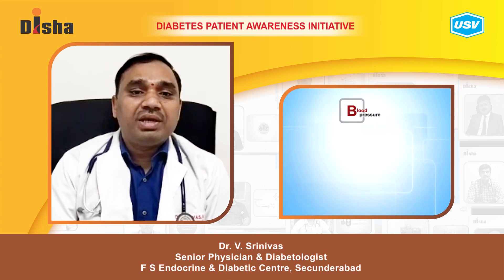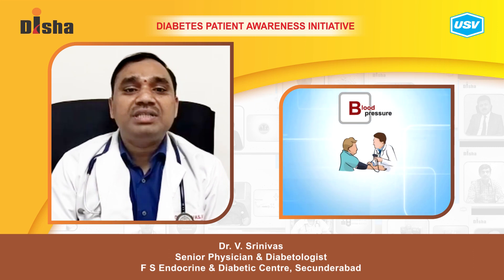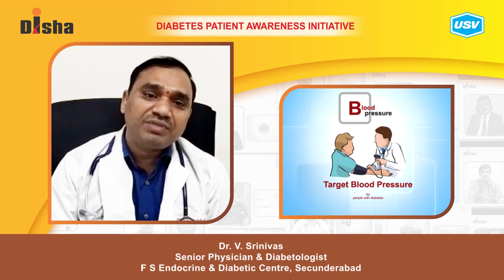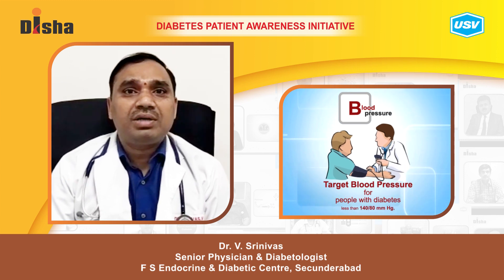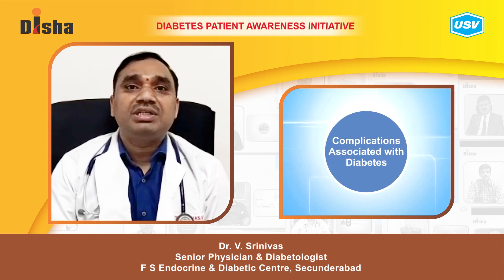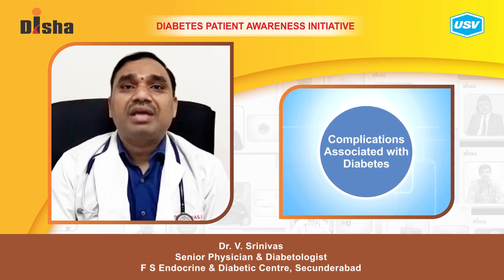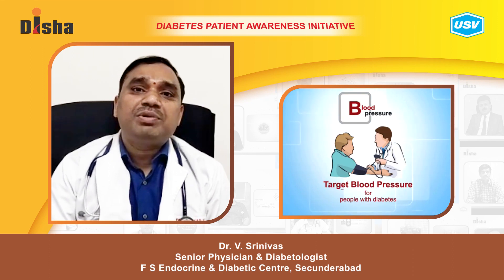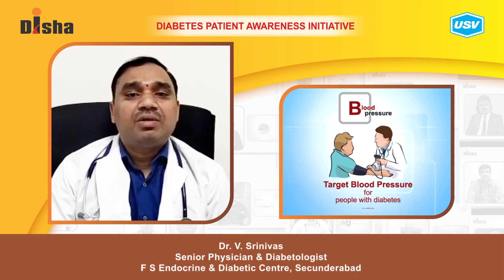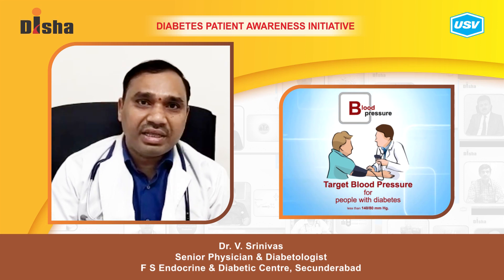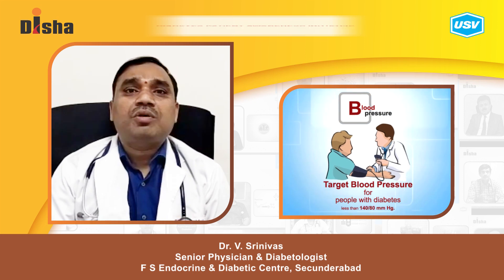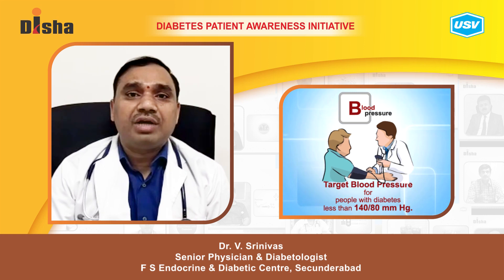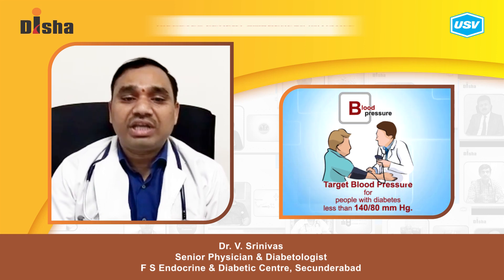Next, 'B' — what does B stand for? B means blood pressure. Blood pressure is an important parameter in all patients with diabetes, which helps control complications such as nephropathy and cardiac complications. The target blood pressure should be monitored in every patient; normal should be less than 130 by 80. If other comorbidities are present like hypertension, nephropathy, or proteinuria, it can be controlled to less than 120 by 80.